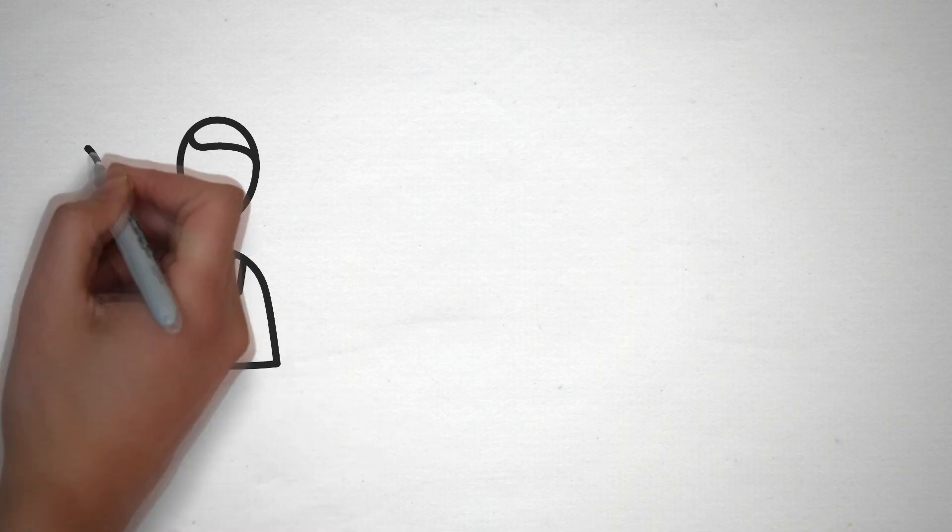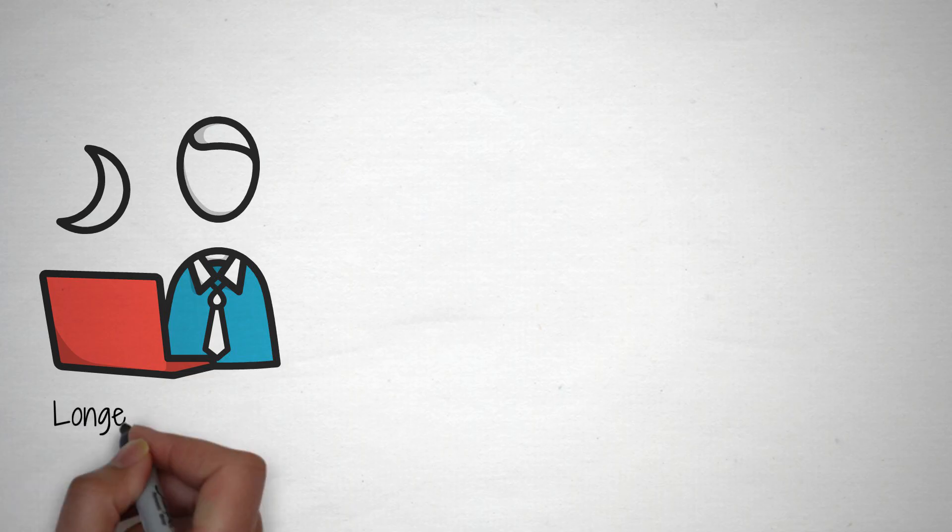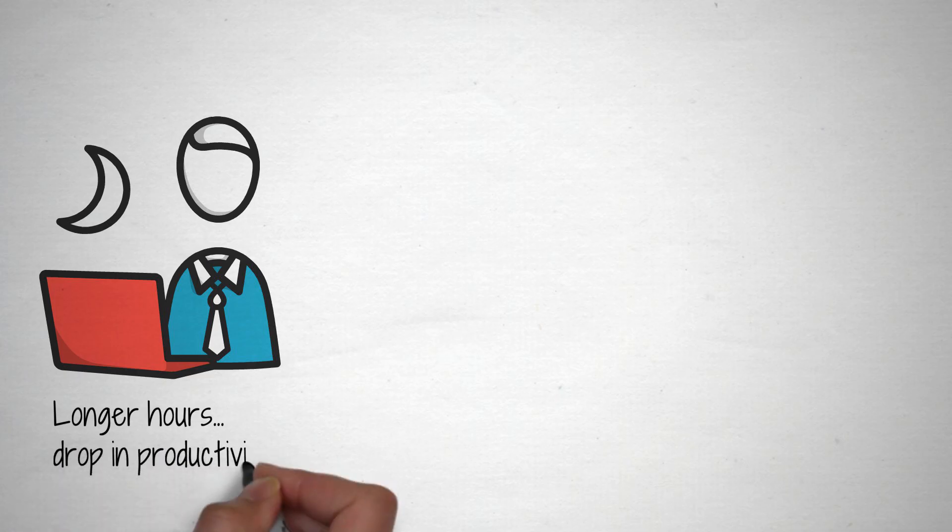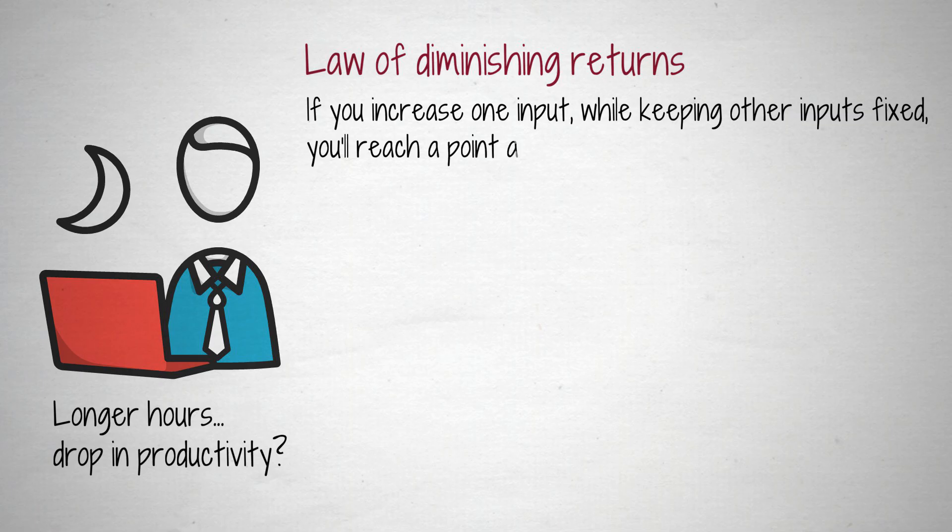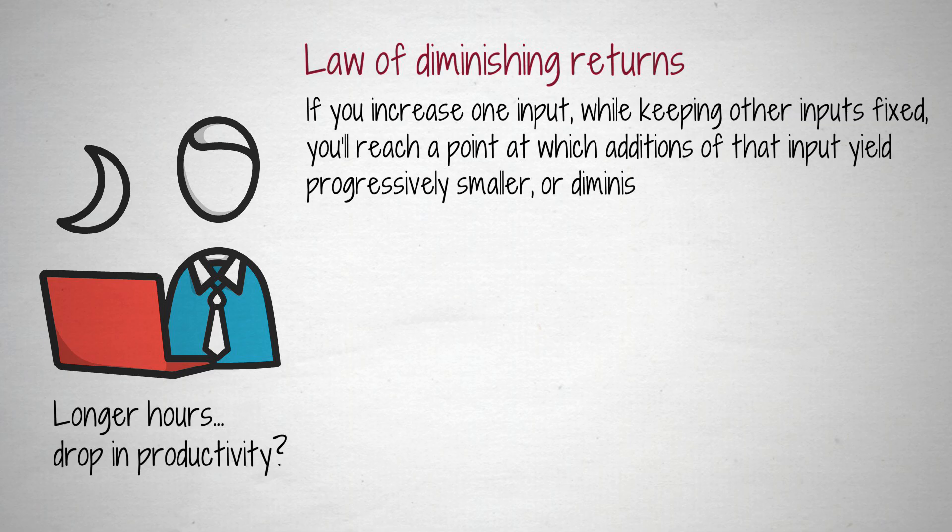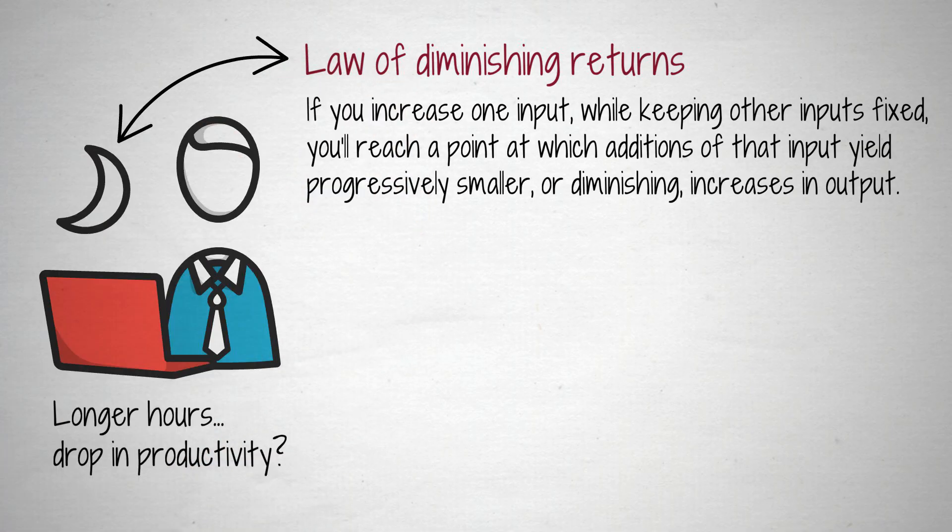Working longer hours is not a surefire way to get more stuff done. In fact, consistently working too much invariably leads to a drop in productivity. The law of diminishing returns states that if you increase one input while keeping other inputs fixed, you'll reach a point at which additions of that input yield progressively smaller, or diminishing, increases in output. If your man or woman hours are your input, constantly increasing them will eventually lead to smaller and smaller increases in output.